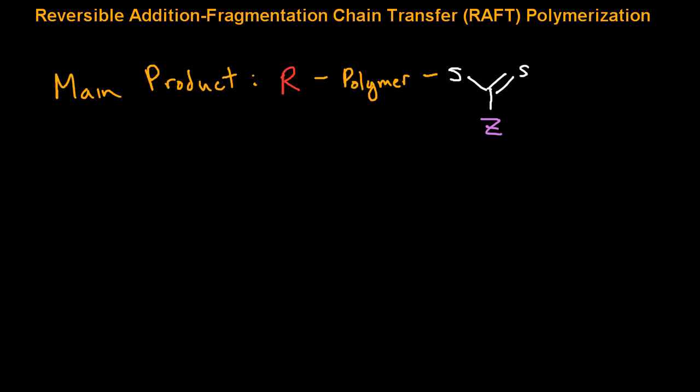The main product of a RAFT polymerization will be polymer chains with an R group on one end and a thiocarbonyl-thio on the other. What's unique about RAFT polymerization is that the polymer can act as an R group in further polymerizations. So it's possible to do block copolymers this way by sequentially adding additional monomer.